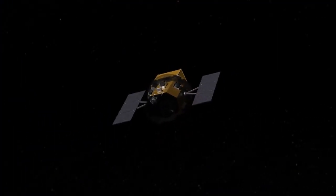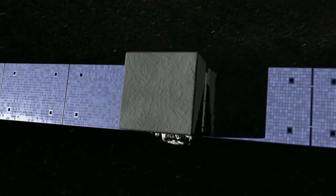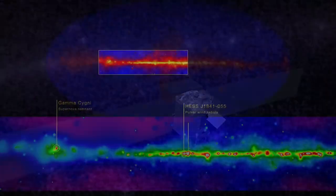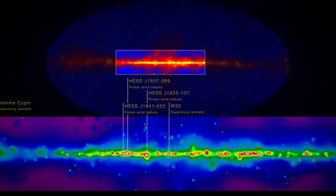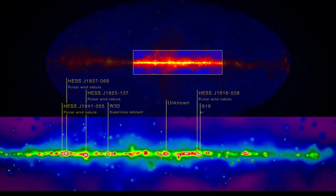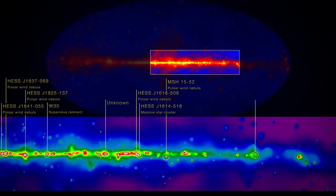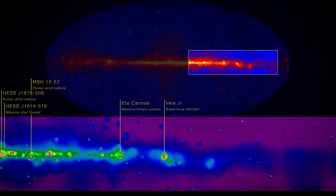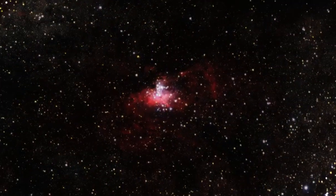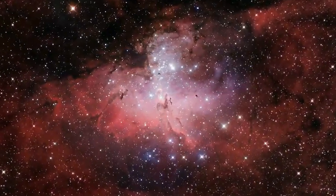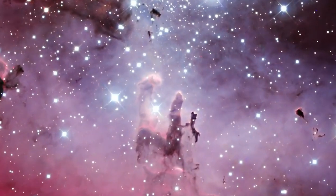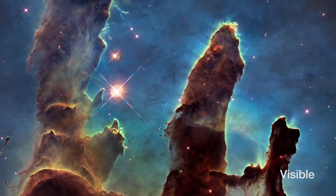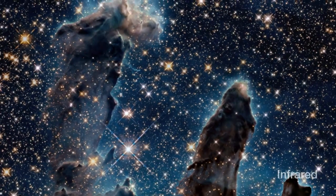Because high-energy light does not penetrate our atmosphere, scientists launched a fleet of space observatories designed to capture wavelengths from gamma-ray to infrared. These wavelengths tell us the temperature of matter in an object. Gamma-rays and X-rays: tens to hundreds of millions of degrees. Ultraviolet: hundreds of thousands. Visible light: tens of thousands. Infrared: hundreds of degrees.